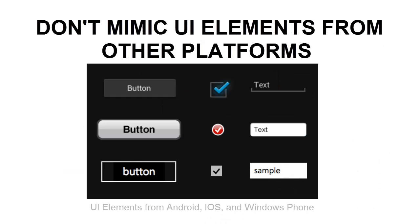Firstly, don't mimic UI elements from other platforms. Platforms typically provide a carefully designed set of UI elements that are themed in a very distinctive fashion. For example, some platforms advocate rounded corners for their buttons, while others use gradients in the title bars. In some cases, elements may have the same purpose but are designed to work a bit differently. As you build your app for Android, don't carry over themed UI elements from other platforms and don't mimic their specific behaviors.